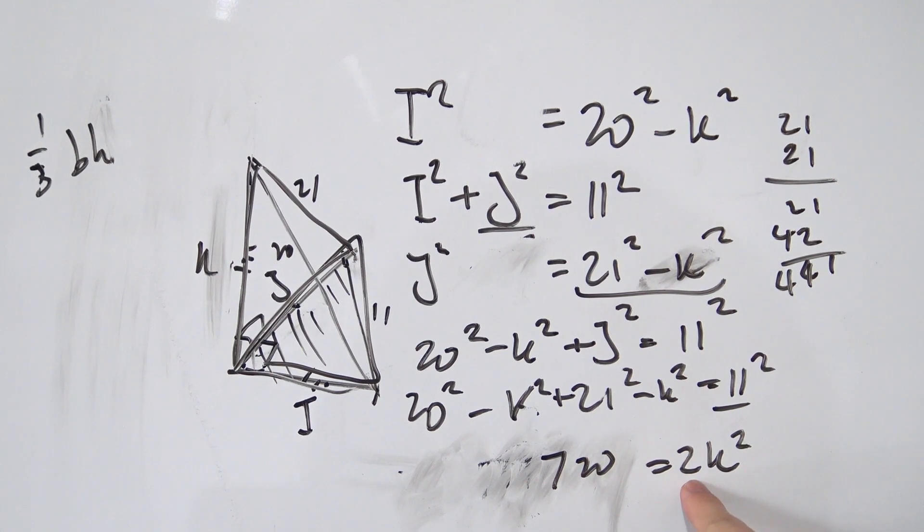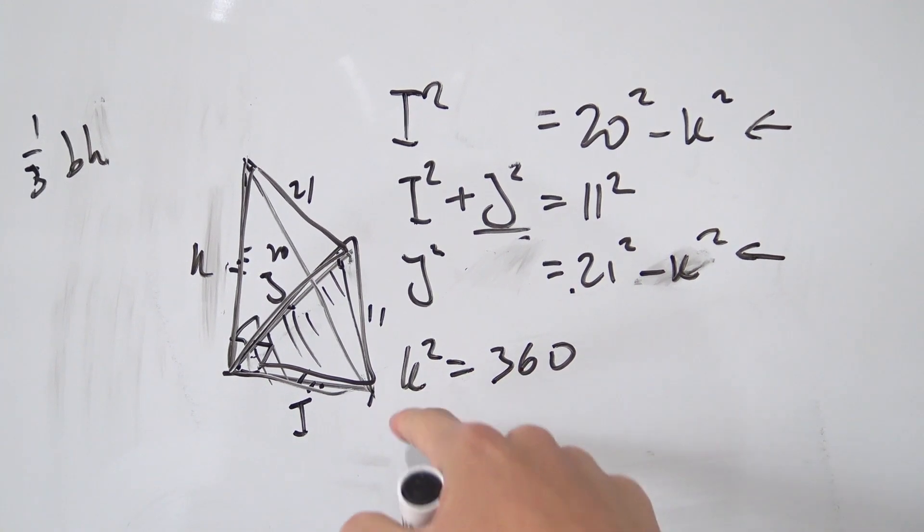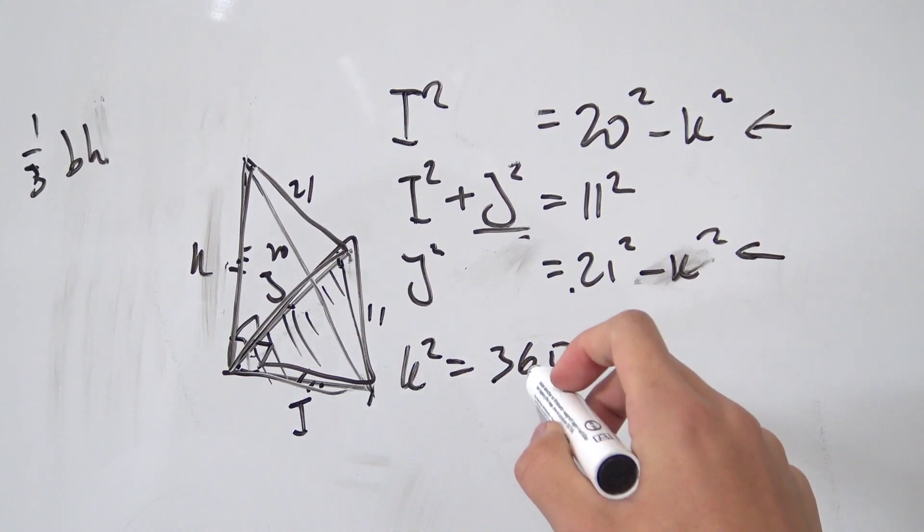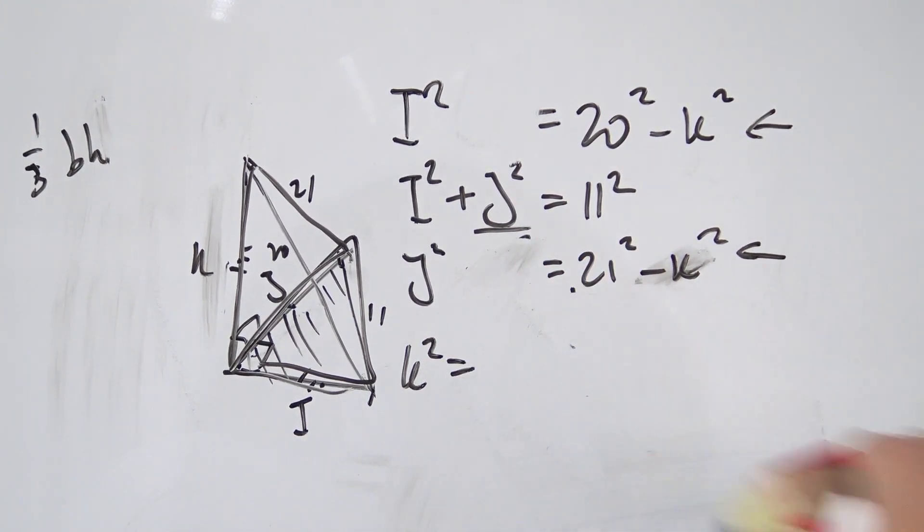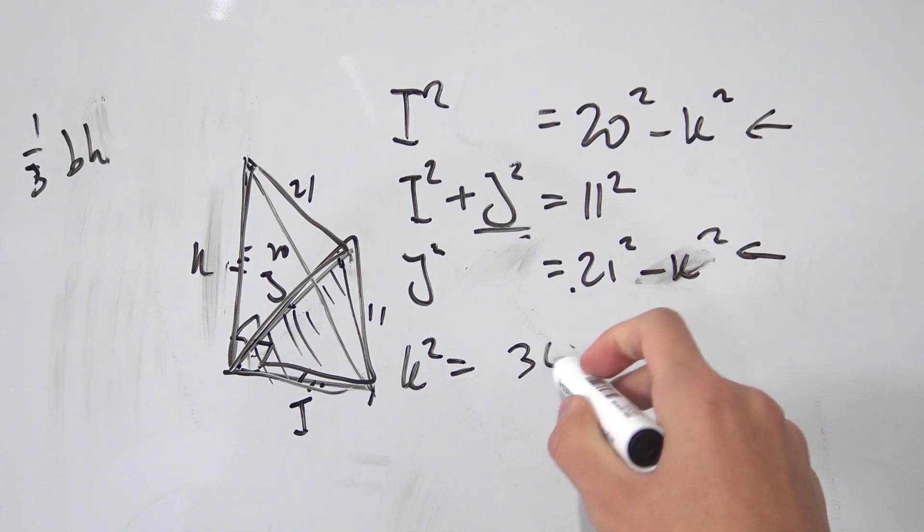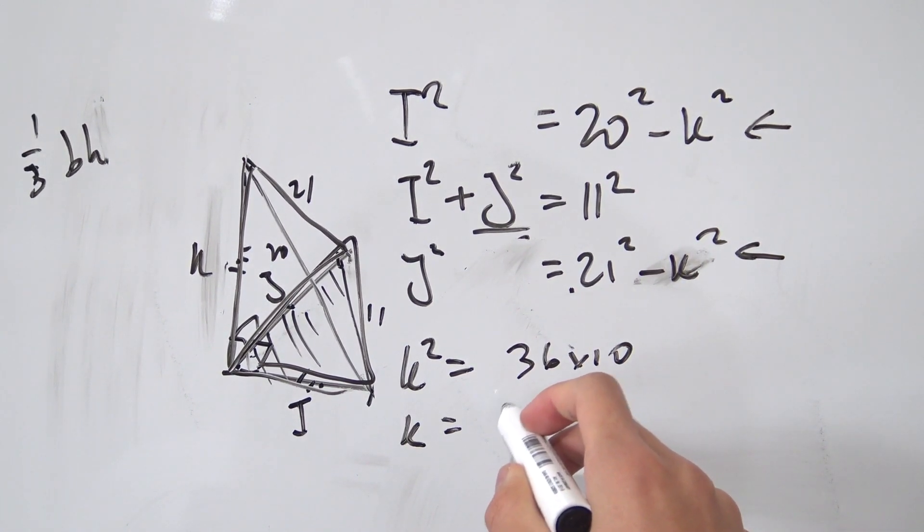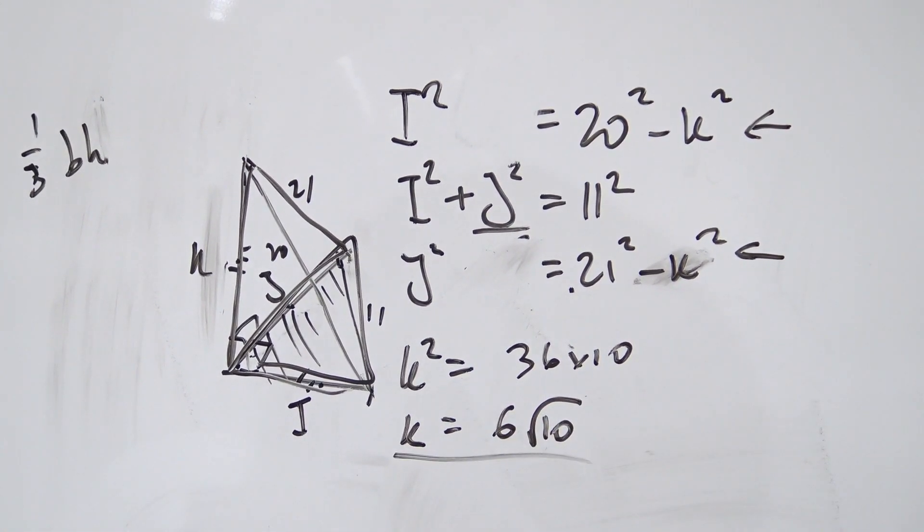And then let's divide this by 2. So now we're going to get K squared being equal to 360. And now taking square root of both sides, positive square root because we're dealing with length right here. So let's see what exactly can we do. 360, that's nothing but 36 times 10. So taking the square root, we're going to get K being equal to 6 square root of 10. So K is 6 square root of 10.